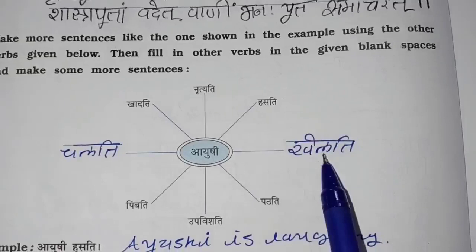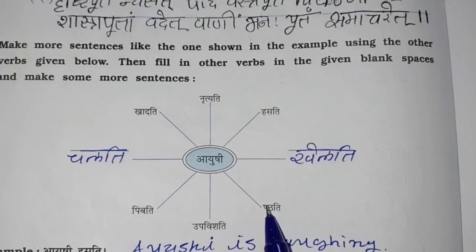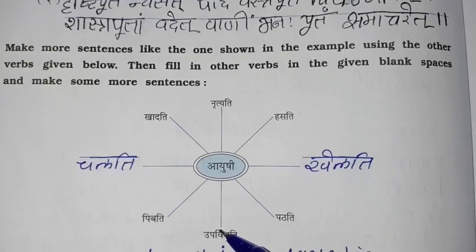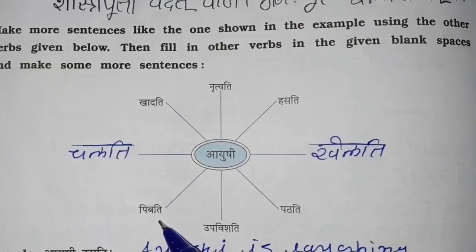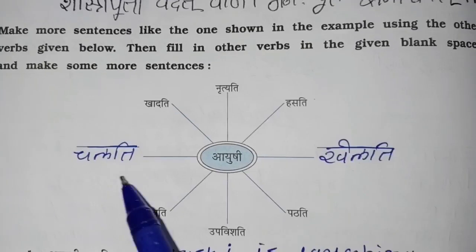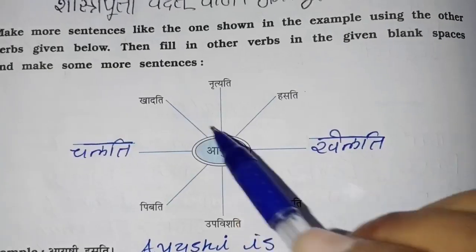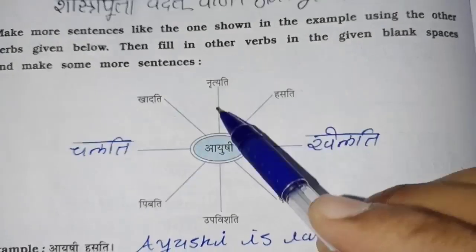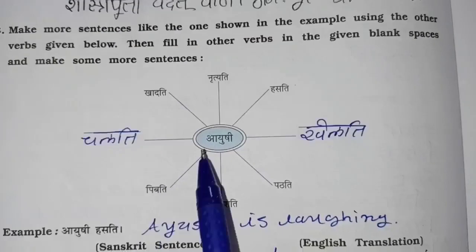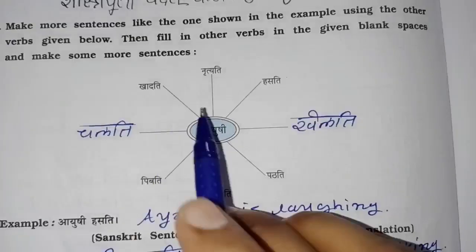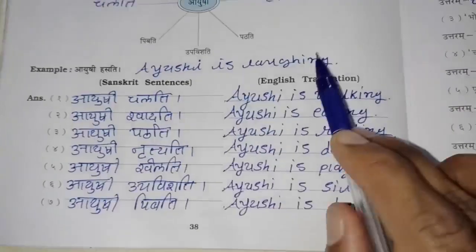Ayushi हसती, Ayushi खेलती — Ayushi is playing. Ayushi पठती — Ayushi is reading. Ayushi उपविशती — Ayushi is sitting. Ayushi पीबदी — Ayushi is drinking. Ayushi चलती — Ayushi is walking. Ayushi खादती — Ayushi is eating. Ayushi नुत्यती — Ayushi is dancing. इस तरह आप और भी बना सकते हो, middle में कोई और नाम लिख कर। तो इस तरह आपको संस्कृत और English में लिखना है।